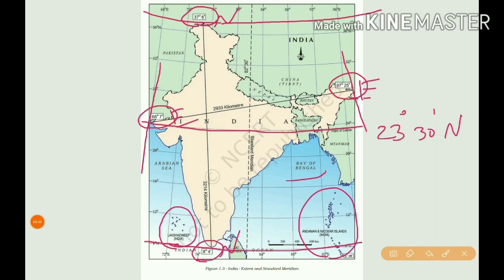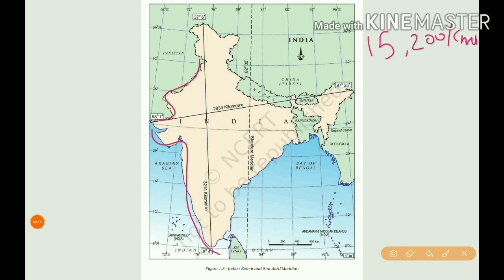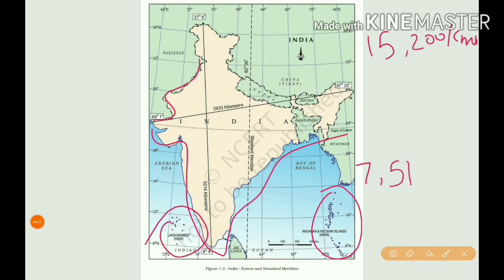India is the 7th largest country. The total length of the land boundary of India is 15,200 kilometers. The coastline of the mainland including the Andaman and Nicobar Islands and Lakshadweep totals 7,516.6 kilometers.